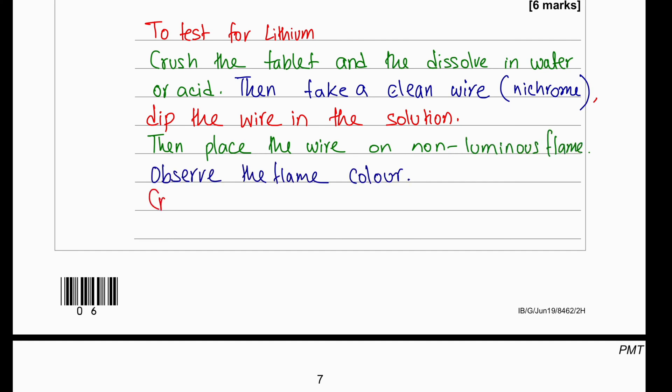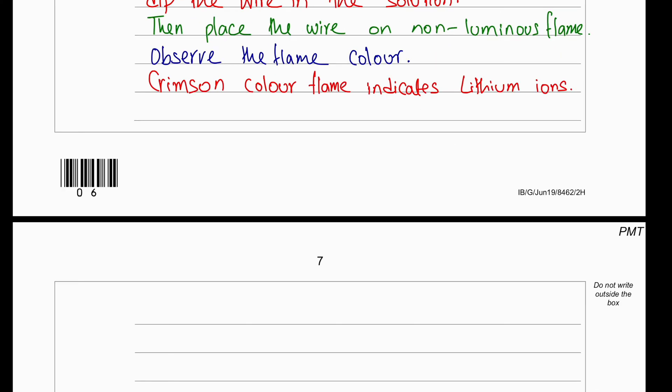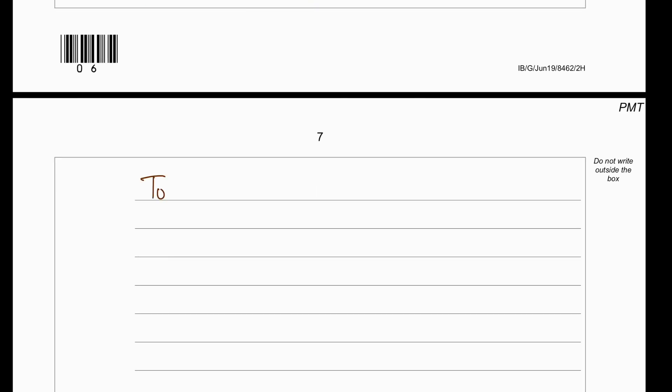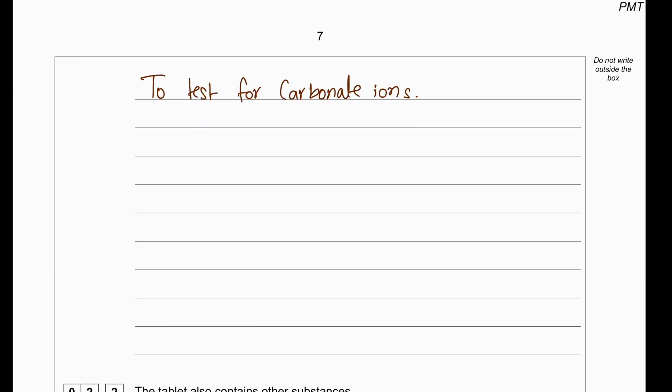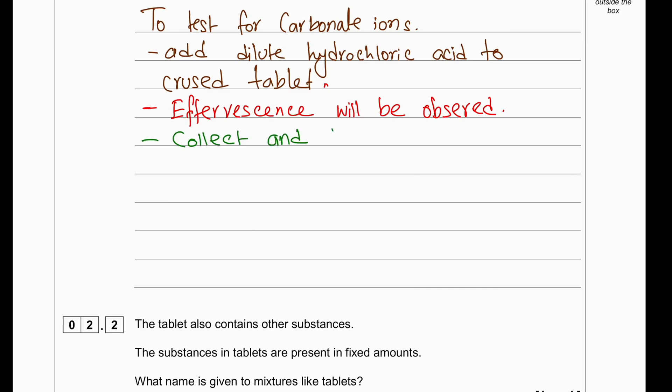Now to test for the carbonate, what we're going to do is we're going to add the hydrochloric acid and we're going to notice some effervescence. Once we notice some effervescence, we will collect the gas and we will bubble the gas through lime water. Once we bubble the gas through lime water, the lime water will become cloudy. So this will confirm the test for carbon dioxide. And when we add acid to a carbonate, it releases carbon dioxide, which will then in turn confirm the carbonate.